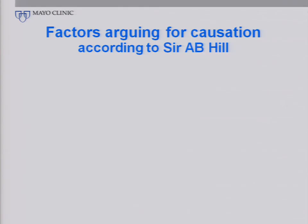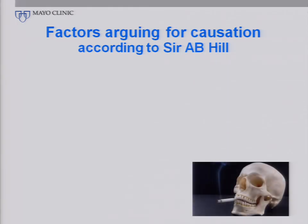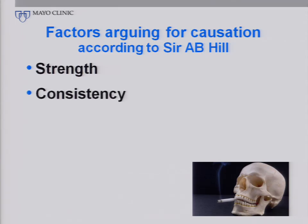Dr. Hill is near and dear to my own heart because one of the many things he accomplished in his career was, in association with his colleague Dr. Richard Dahl, to examine the association between cigarette smoking and disease. Looking at that example, the factors he thought were important were, for example, strength of association. For cigarette smoking, there was an overwhelming association between smoke exposure and lung cancer that was very strong and pointed to cause. There was consistency — every study that looked at this association found similar associations. There was specificity, although this was actually a problem for Dr. Hill as he tried to look at cigarette smoking, because it was hard to believe that smoking could cause all these different kinds of problems — but in fact, it did.